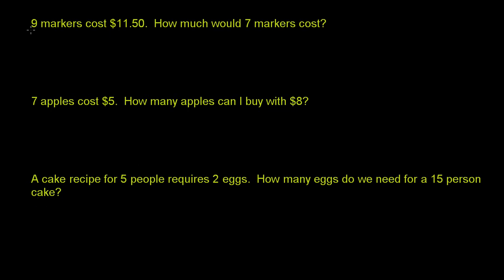So in this first problem, we have nine markers cost $11.50. And then they ask us, how much would seven markers cost? Let's set x to be equal to the cost of seven markers. The way to solve a problem like this is to set up two ratios and then set them equal to each other.